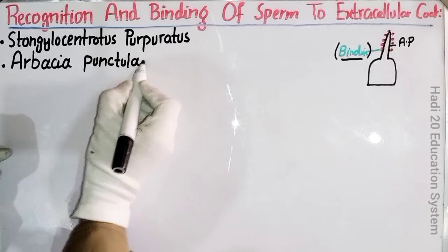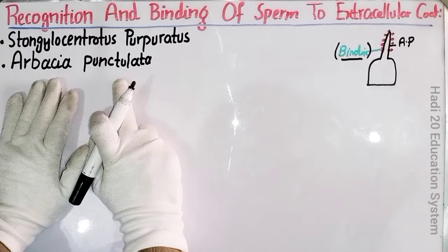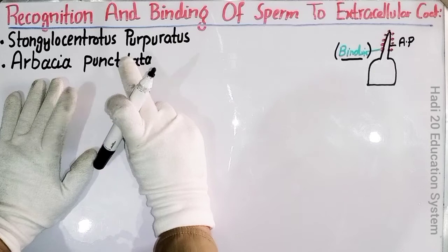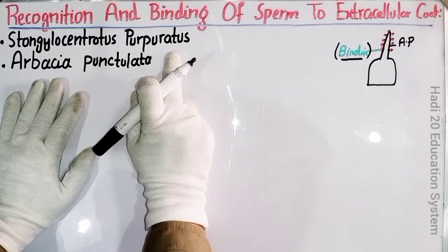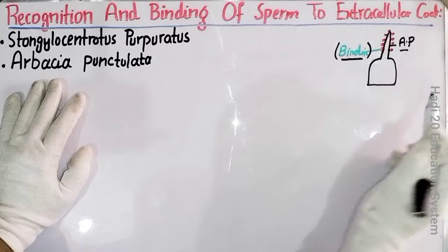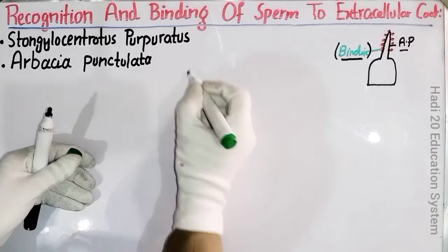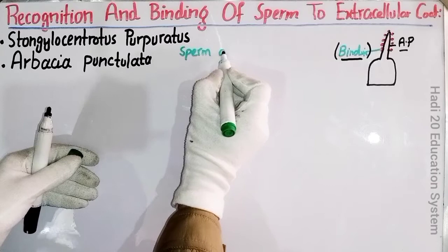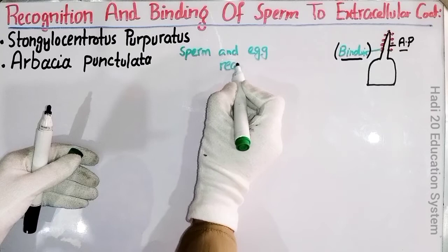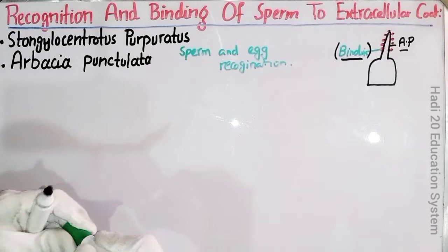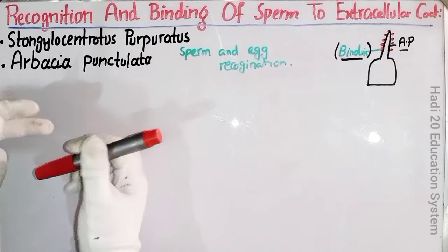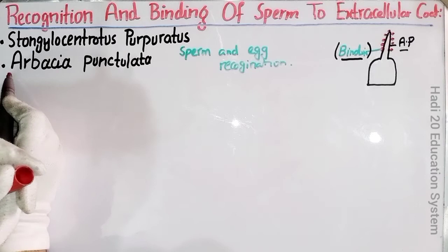آپ کو یہ چیز یاد رکھنی ہے کہ جو Arbacia punctulata species ہے اس کی binding protein الگ ہوگی اور دوسری species کی binding protein الگ ہوگی — یعنی کہ ایک species کی binding protein صرف اسی ایک کی receptor site کے ساتھ attach ہو سکتی ہے، دوسری کی receptor site کے ساتھ نہیں۔ یہ bindin acrosomal process پر present ہوگی اور sperm-egg recognition میں helpful ہوگی — it helps in the sperm and egg recognition process۔ یہ بھی ایک proposal ہے کہ جو species-specific binding receptor on the egg ہوتی ہے۔